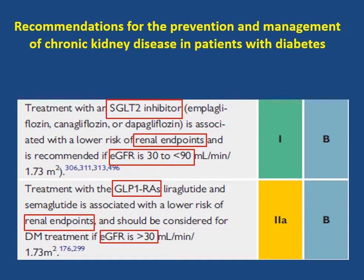What are the recommendations for prevention and management of chronic kidney disease in patients with diabetes? Treatment with SGLT2 inhibitors — empagliflozin, canagliflozin, or dapagliflozin — is associated with a lower risk of renal endpoints and is recommended if the estimated GFR is between 30 to less than 90 mL/min (class 1 recommendation, class 2a recommendation). Treatment with GLP-1 receptor agonists — liraglutide or semaglutide — is associated with a lower risk of renal endpoints and should be considered for diabetic patients if the estimated GFR is above 30 (class 2a recommendation).